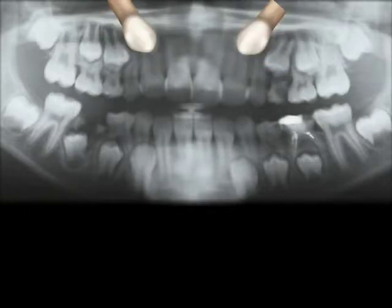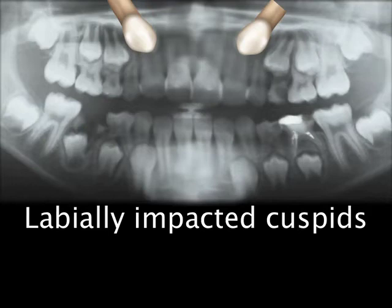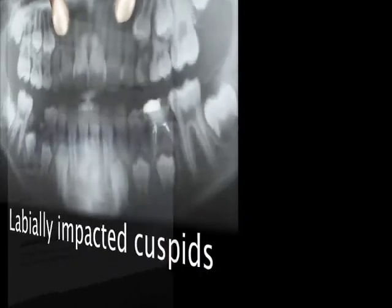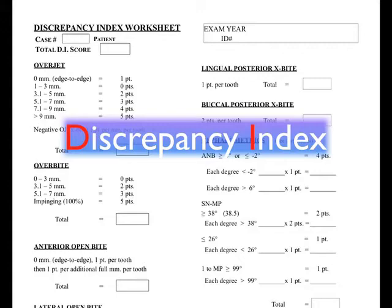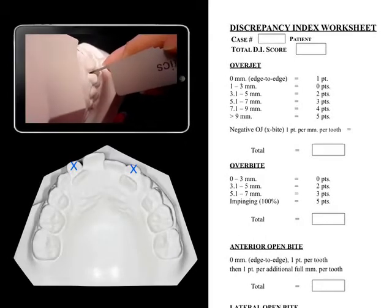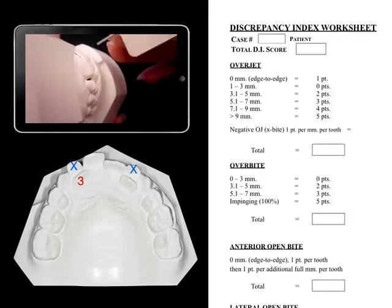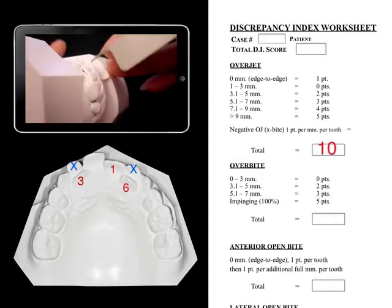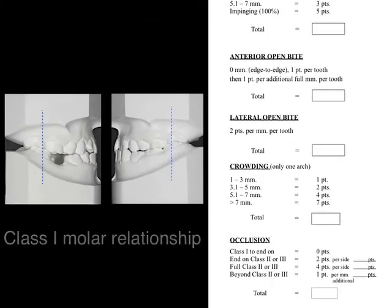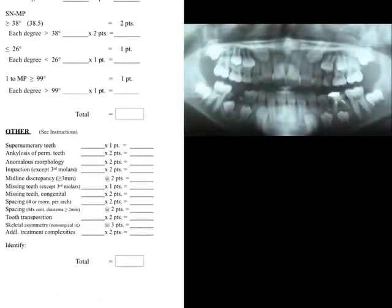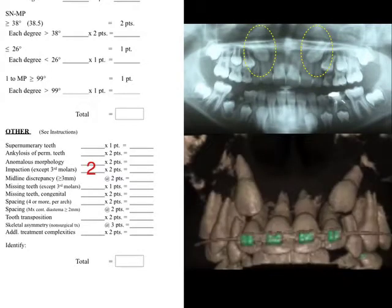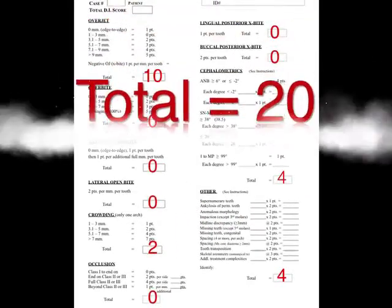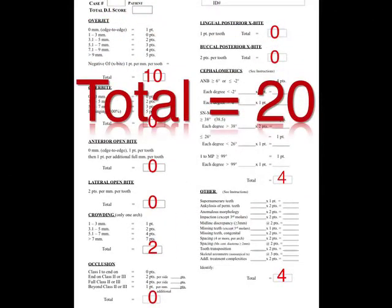From the panel, could you see the two impacted canines? So actually this is a case of anterior crossbite combined with impacted canines. To get a comprehensive check we used the ABO discrepancy index. The result showed overjet here got three points plus one plus six points, total ten points. That was the major issue, and the occlusal relationship is plus one so we got zero. For the last item we got four points due to the two impacted canines, so the total score is 20, showing that this is a difficult case.